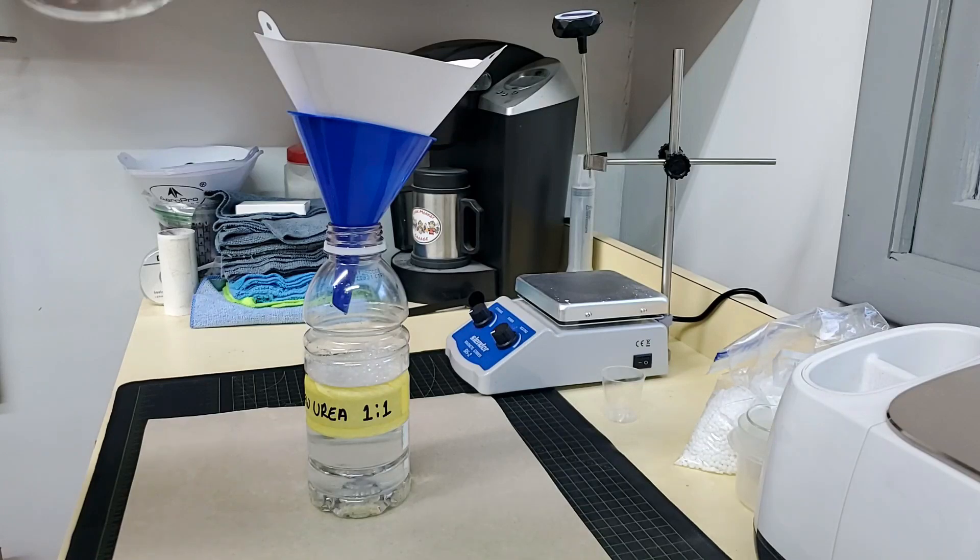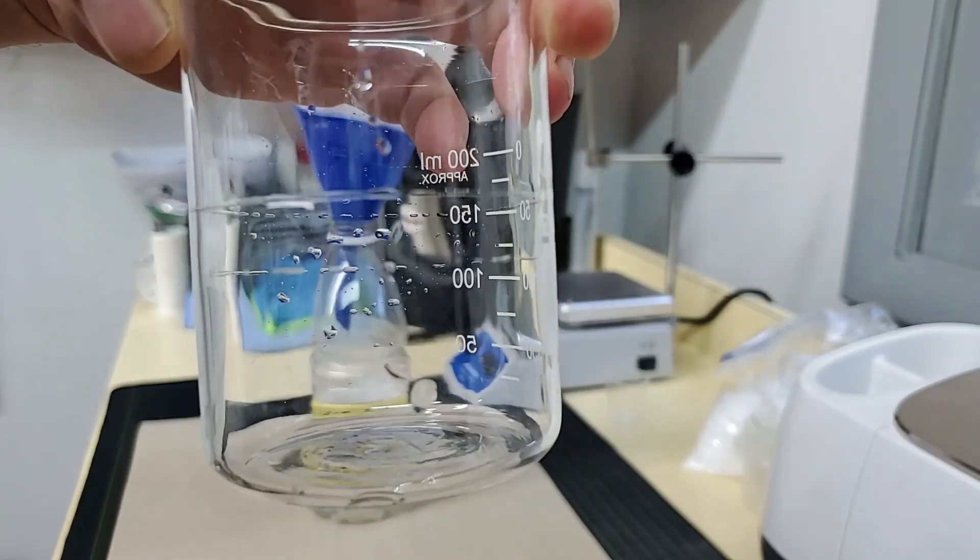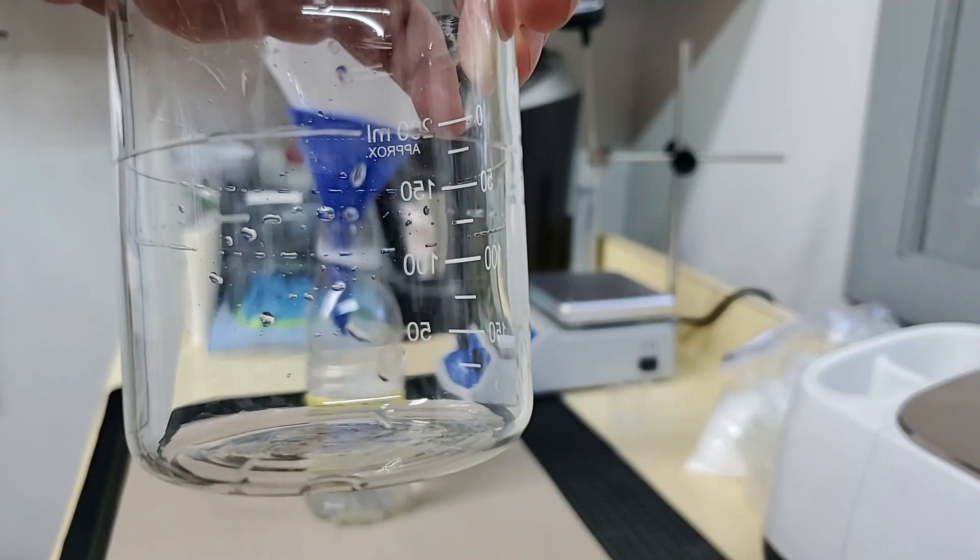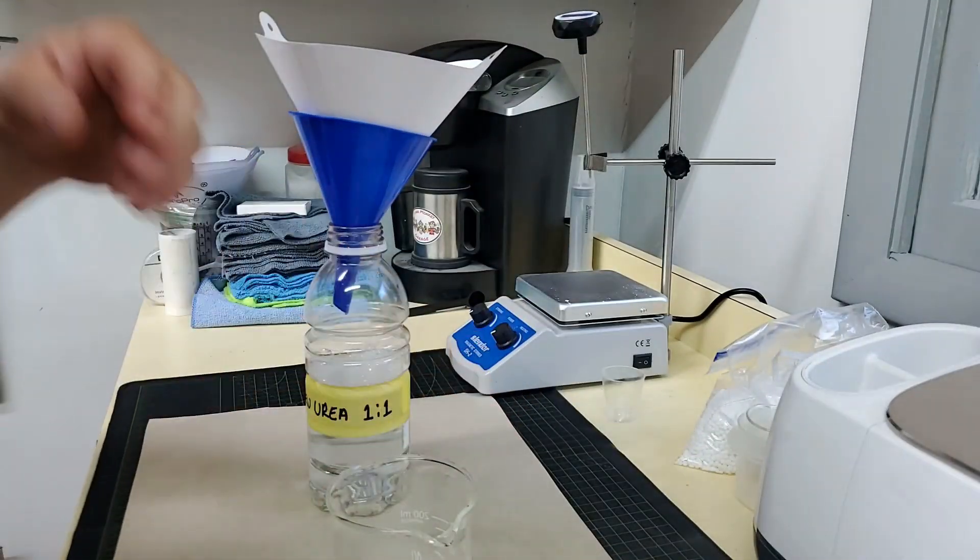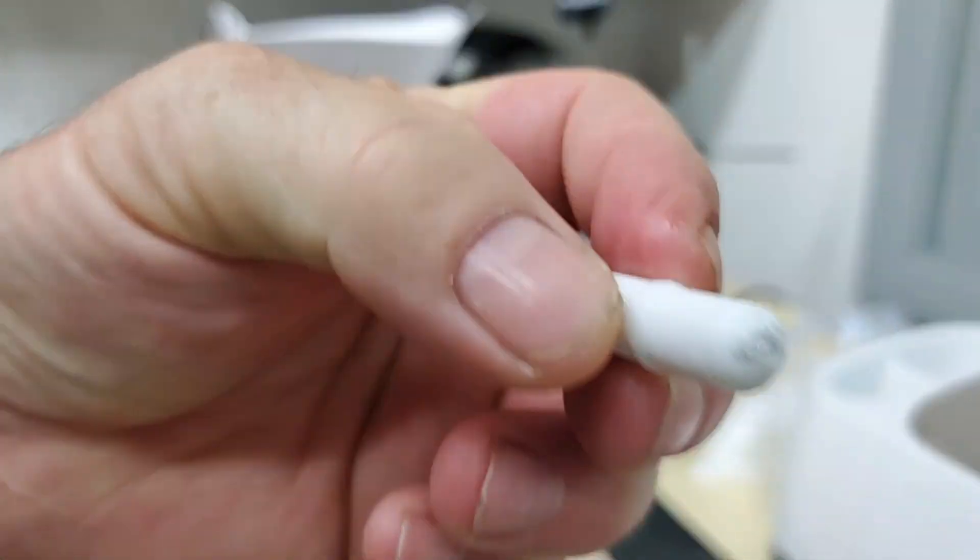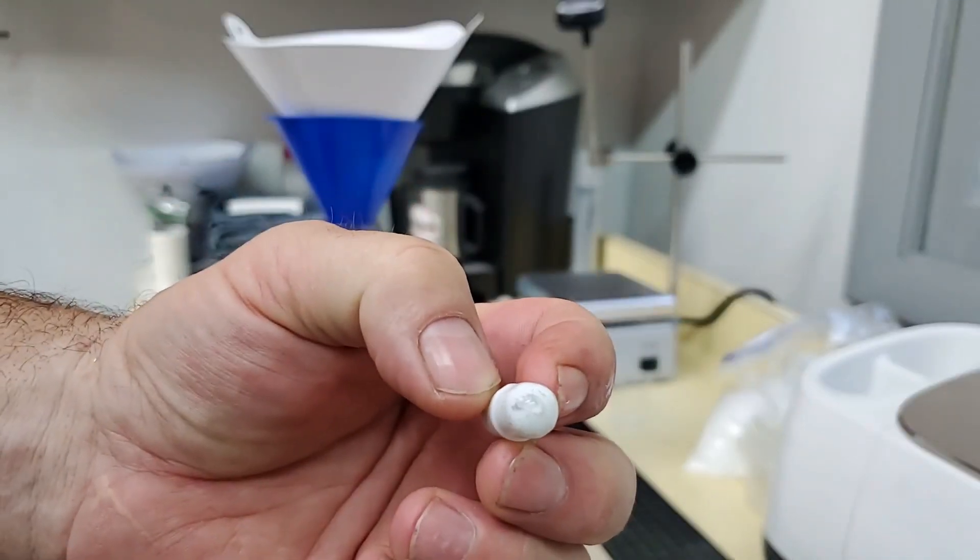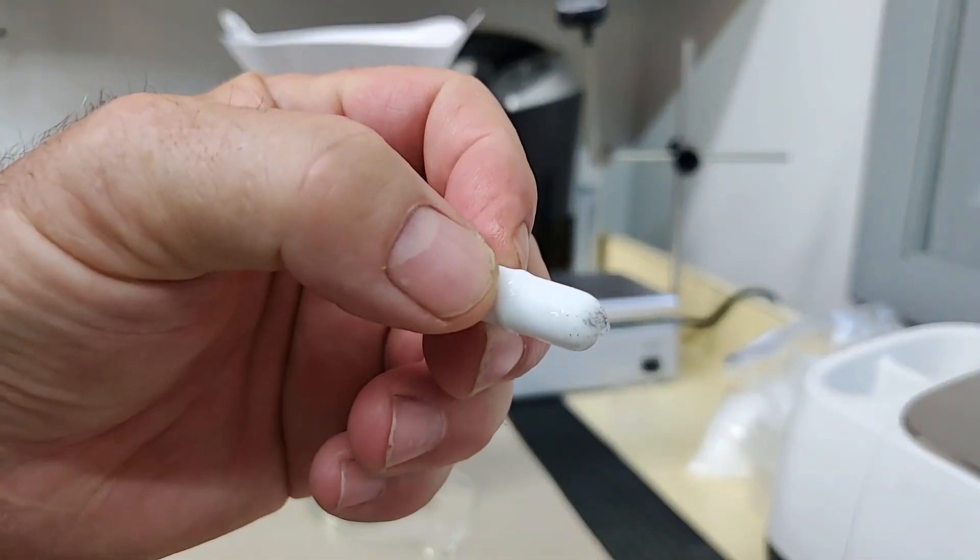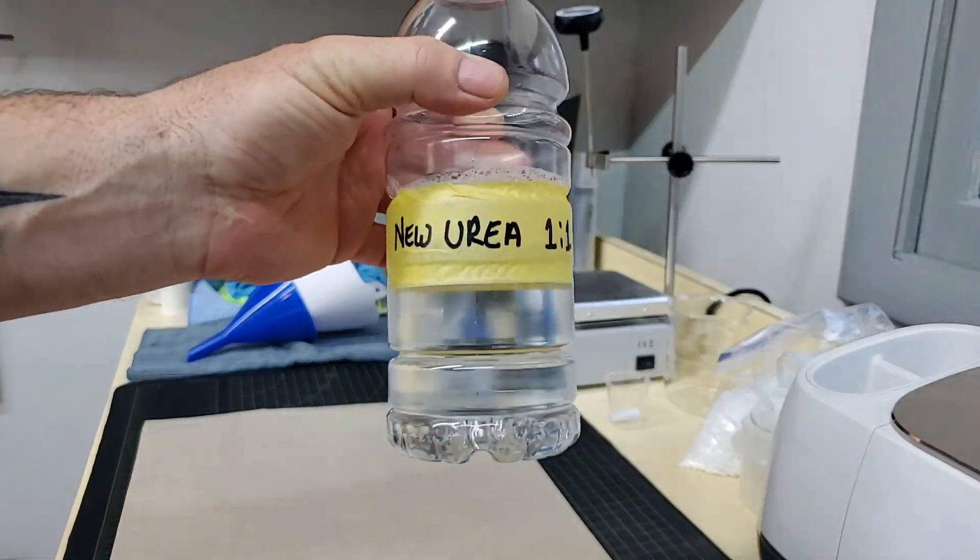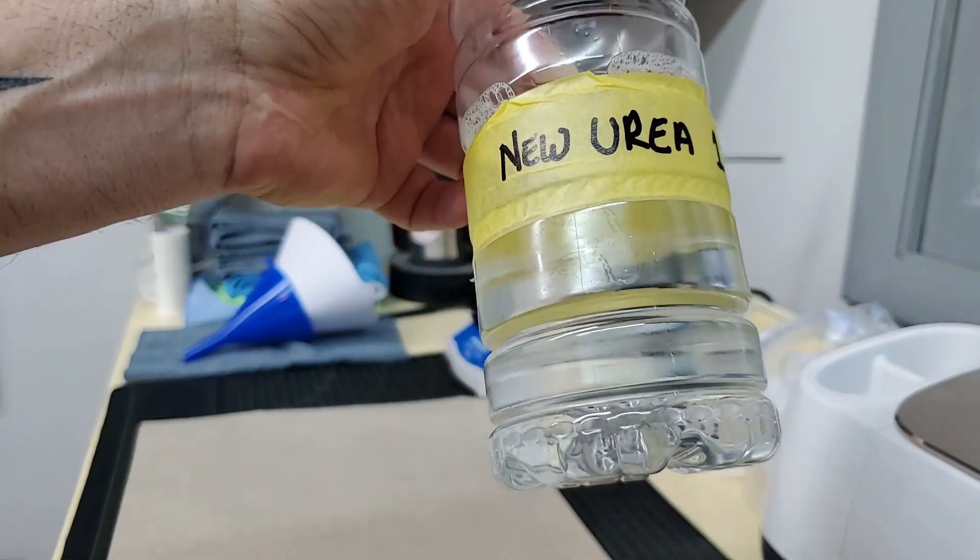Looks like we had a piece that was not urea, it didn't dissolve. And if you notice on the pill, it actually catches metallic fragments that are in the urea. So now we have pure, clean urea crystal solution.